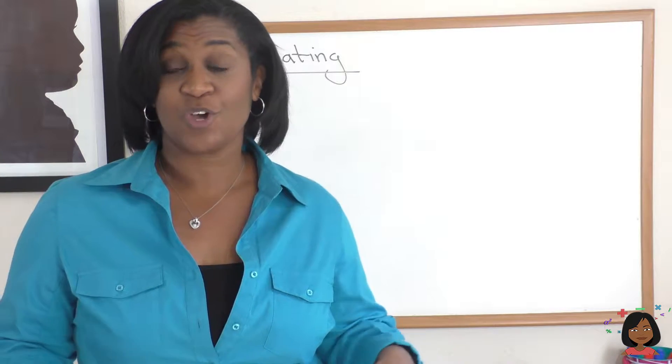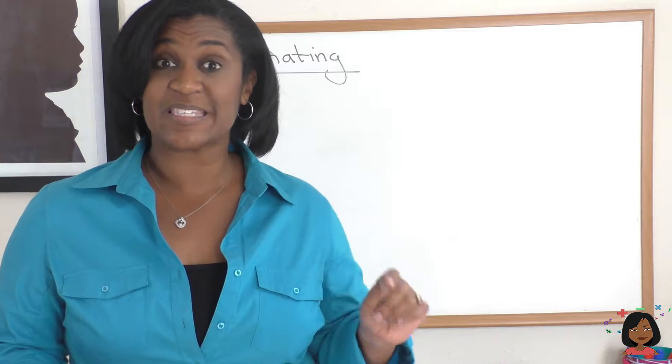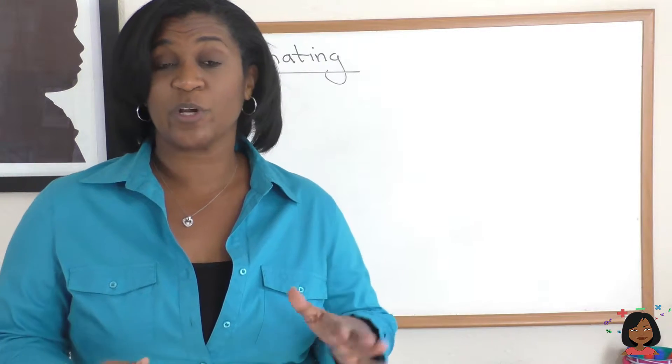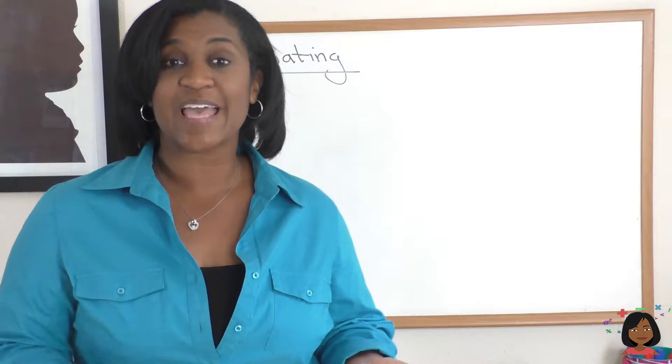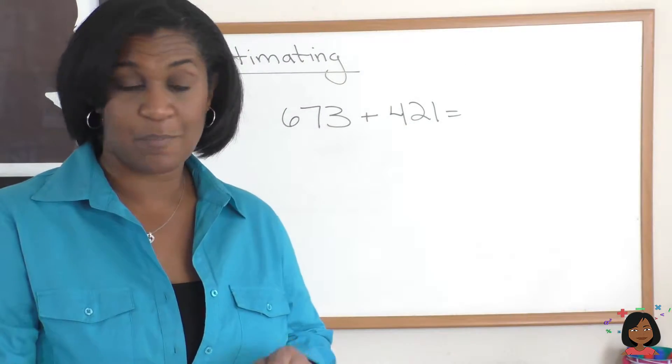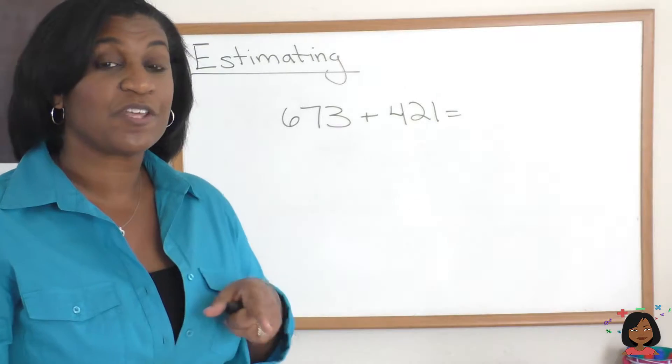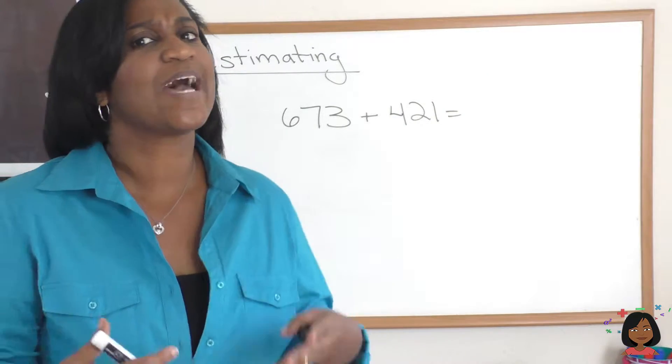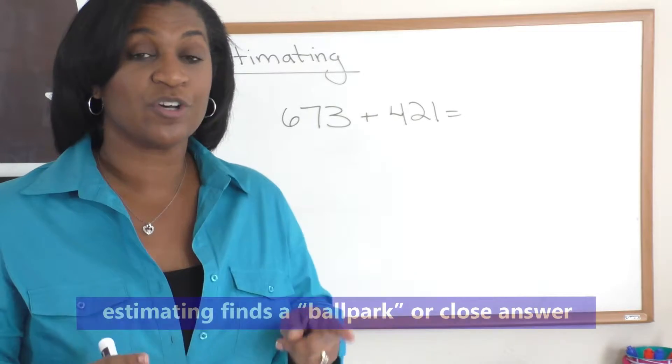So let's take a look at some examples where we're going to do some addition or subtraction, but we're going to use rounding to help us estimate the answer. Let's look at these two numbers: we've got 673 and 421. We could sit down and do the math or we could estimate to see what a ballpark answer might be for this problem.